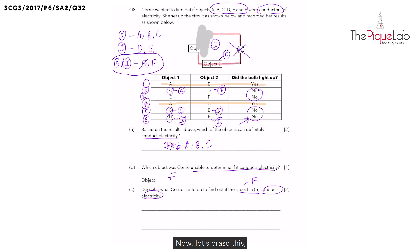Now let's erase this so that we can work on our last question. How can we confirm if object F is an electrical conductor? So here I'm going to put object F. Should I pair it with an electrical insulator?